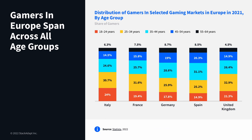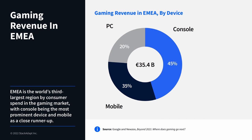This chart showcases the distribution of gamers in selected EMEA markets — Italy, France, Germany, Spain, and the UK — starting at the 18+ age group. It's interesting to see that the distribution is quite evenly spread, with a general focus on the 25–34 age group, but demographics are widely spread so you can target any age group. On gaming revenue by device, console leads with 45%, followed by mobile at 35% and PC at 20%, totaling €35.4 billion, making EMEA the third largest region by consumer spend.